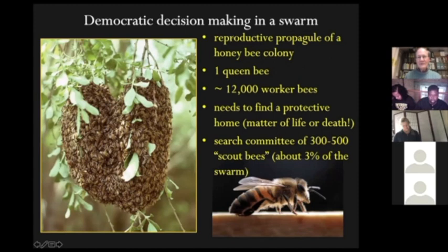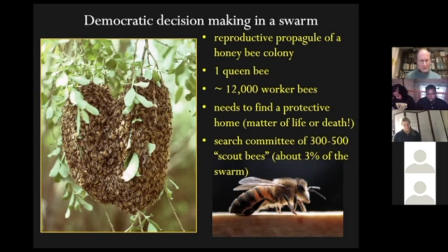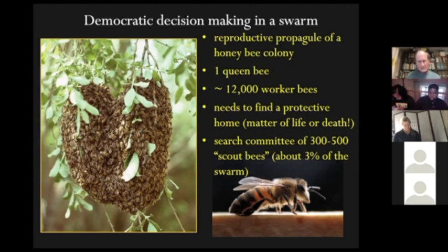Let's review what a honeybee swarm is. It's a reproductive propagule of a honeybee colony — a bunch of bees, about 12,000 worker bees on average, and one queen bee, the mother queen, that has left the parent colony, flown out, and assembled into a swarm cluster. It is homeless at this point and needs to find a protective home. For bees in our part of the world, this is a matter of life and death — they won't get through the winter without building their nest in shelter. Remarkably, the search for a new home is made by only about 3% of the bees in the swarm — still 300 to 500 bees, but a very small portion of the whole mass.